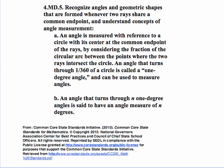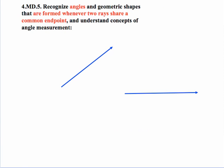Part B: An angle that turns through n 1 degree angles is said to have an angle measure of n degrees. Let's look at the main portion, the introductory portion of the standard, and concentrate on the definition of an angle.